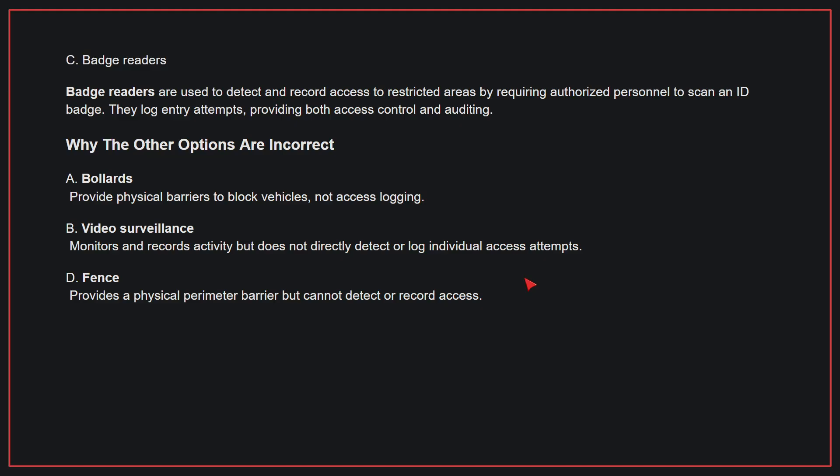B, video surveillance — this monitors and records activity but does not directly detect or log individual access attempts. D, fence — this provides a physical perimeter barrier but cannot detect or record access. Therefore, the correct answer is C.